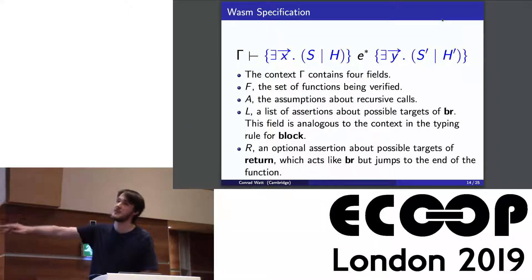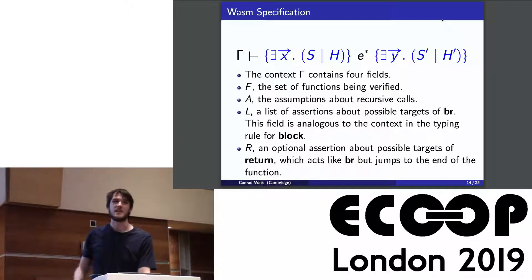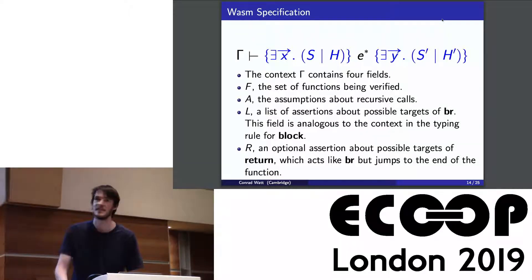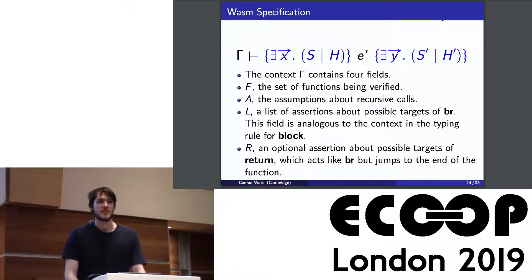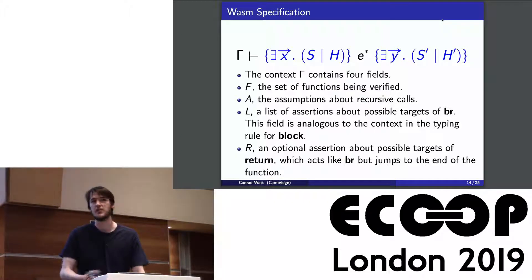A WebAssembly specification is a pre and post condition — familiar from Hoare logic — except now pre and post conditions are assertions with both a stack part, a heap part, and some number of existentially quantified variables. You also have a context keeping track of things needed for the proof. The F and A parts of the context handle record-keeping about functions for mutually recursive proofs, standard from other Hoare and separation logics. The L and R parts are more WebAssembly-specific, keeping track of the assertion version of the types from the typing rules — because if you're inside a block and execute a BR, you need to satisfy the post condition of that block at the point of execution.